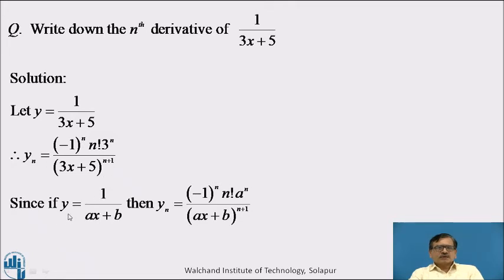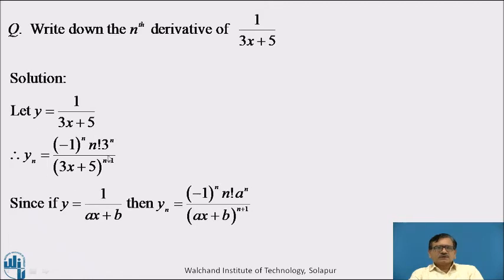Just now you have seen: if y = 1/(ax + b), then yₙ = (−1)^n · n! · aⁿ / (ax + b)^(n+1). Here, comparing with 1/(3x + 5), a = 3 and b = 5. This is the nth derivative of the given function 1/(3x + 5).